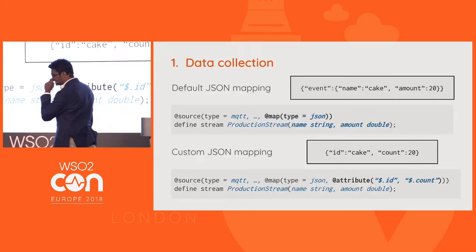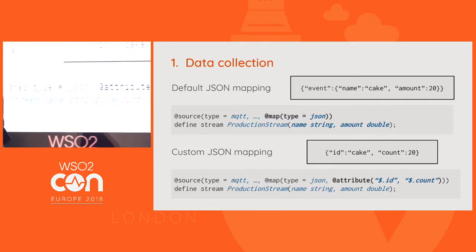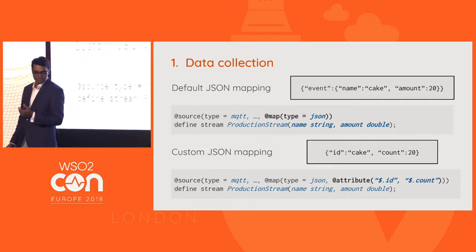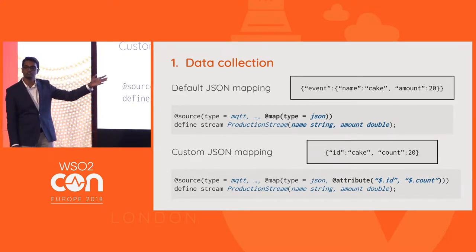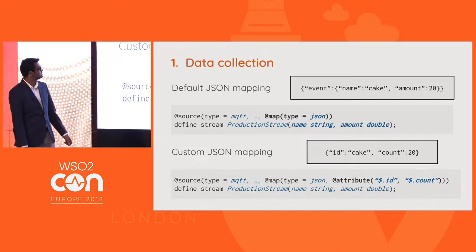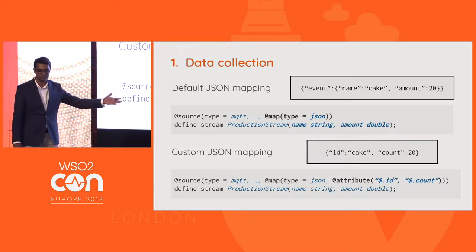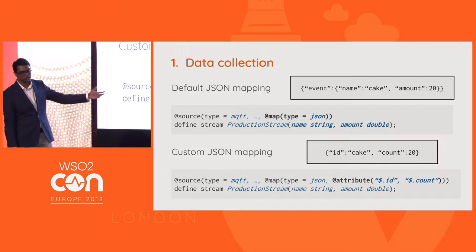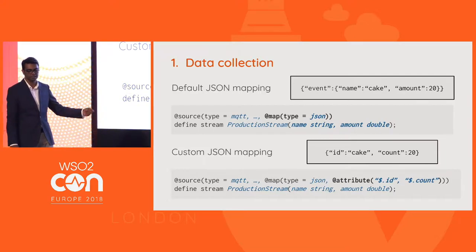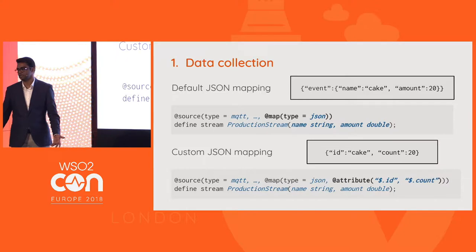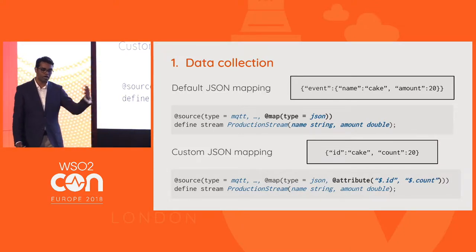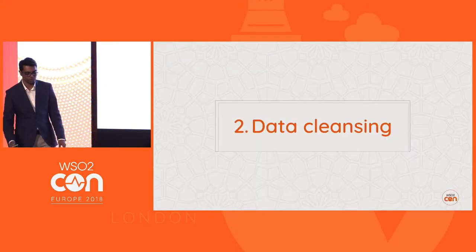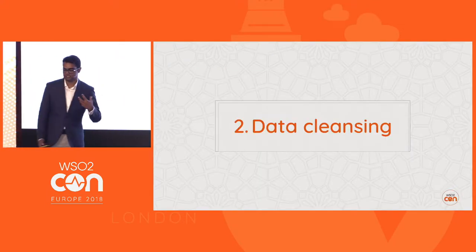When you collect data — for example, a JSON message — you can just say JSON. You then need to send it in the expected format with event name and values. If you have a custom JSON message, you have to provide a pattern for how to extract the name and amount from the incoming JSON. That's a simple annotation. The same applies to other data types as well.